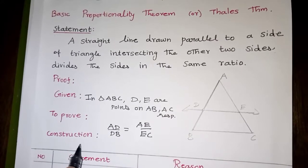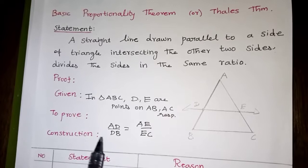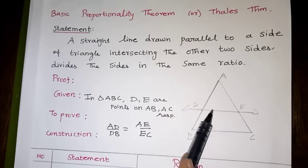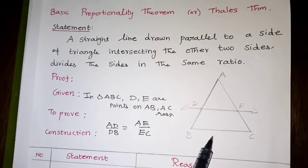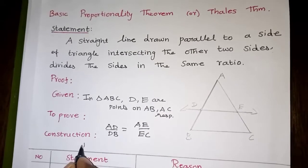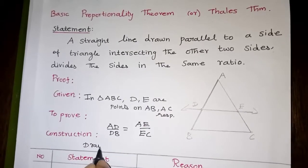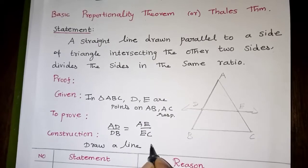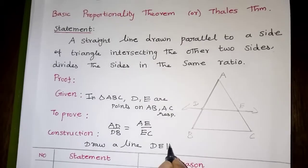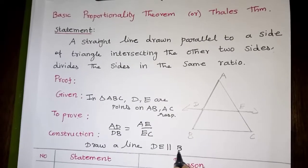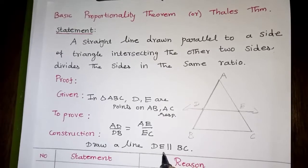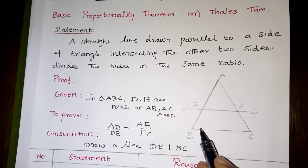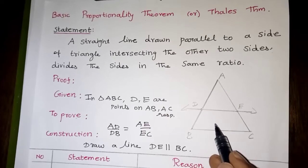Construction: draw a line parallel to BC. The line drawn is parallel to BC, and since it is parallel, the corresponding angles are equal.